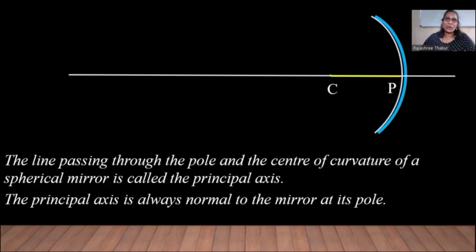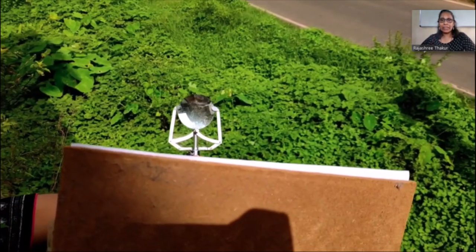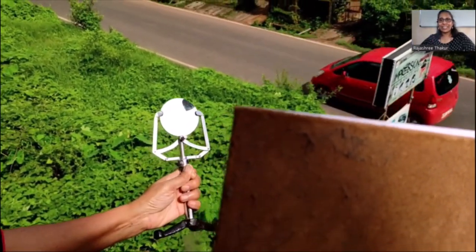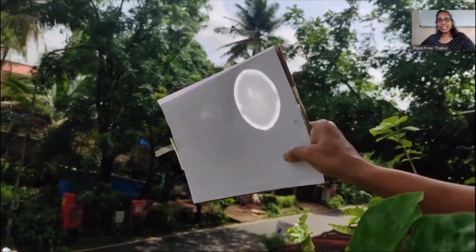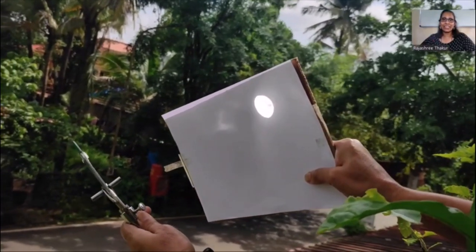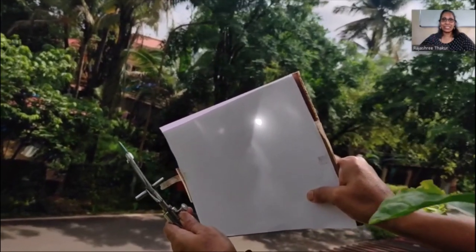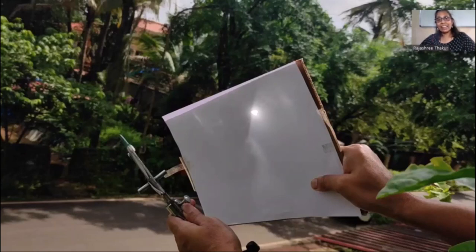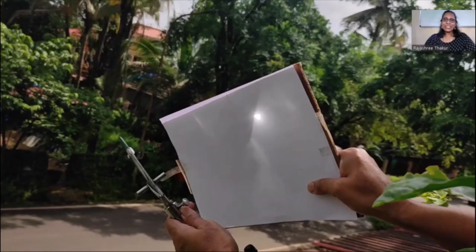Let's enjoy the activity. You can see the mirror and the screen. The sun's rays are reflected onto the screen but they are not yet focused. And now they are focused. Since the sun is at a large distance — almost infinity — you can see that the image is formed at the focus. So the distance between the mirror and the screen is almost equal to the focal length of the concave mirror. I'm sure you understand better when you perform an activity.